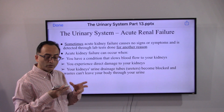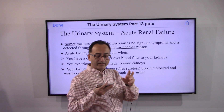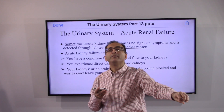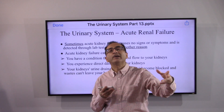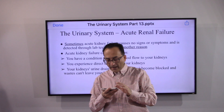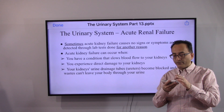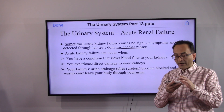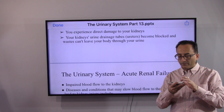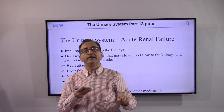Sometimes acute kidney failure causes no signs or symptoms and is detected through lab tests done for another reason — someone can be asymptomatic and your first symptom may be the actual diagnosis of the condition. Acute kidney failure can occur when there is a condition that slows blood flow to your kidneys, direct damage to your kidneys, or when the ureters become blocked and waste cannot leave your body through urine.